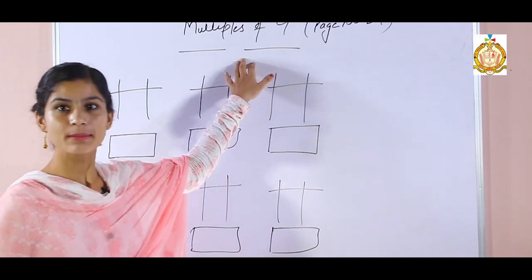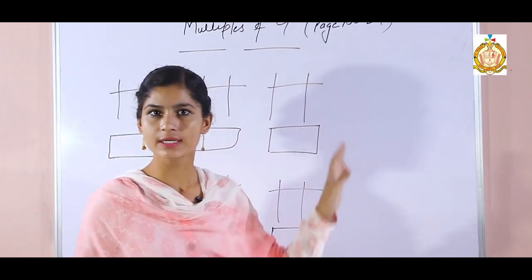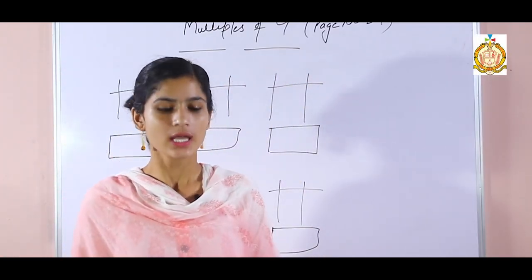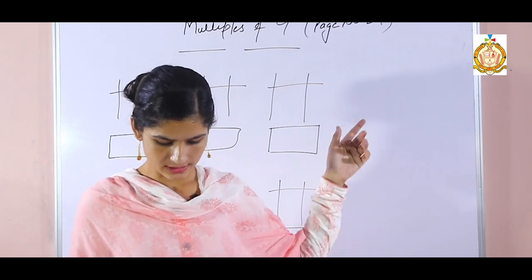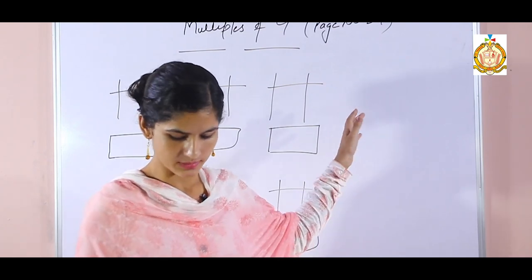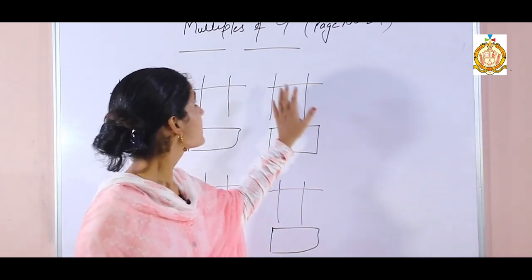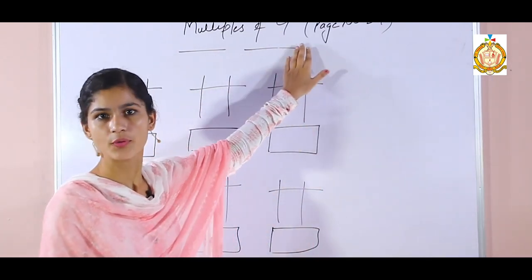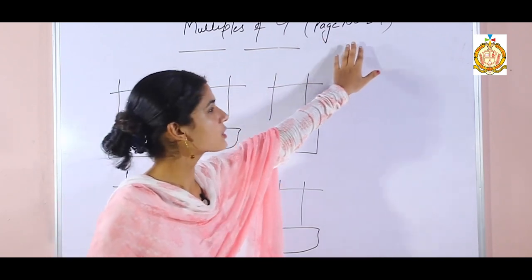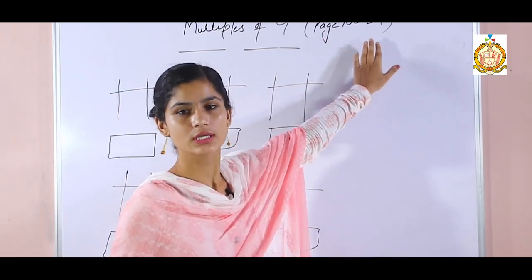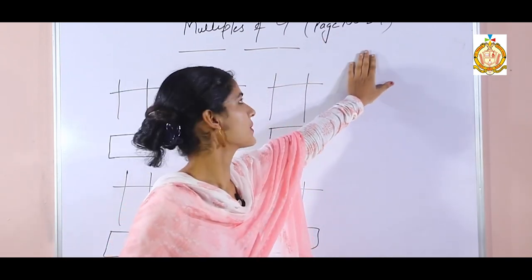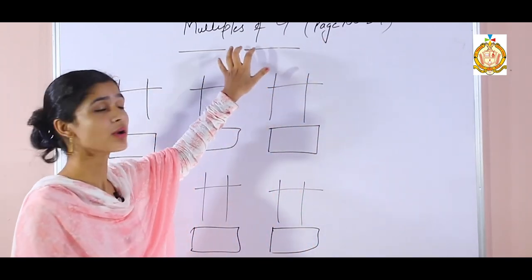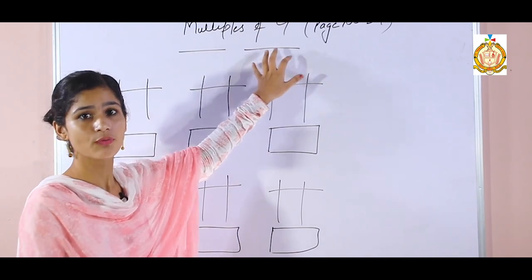We are going through the same level, third A level, for second class students. Your topic is on page number 34, that is multiples of 4. So how will we find out the multiples of 4?